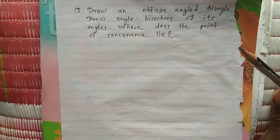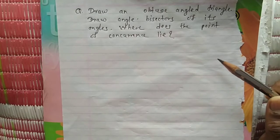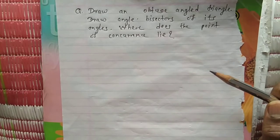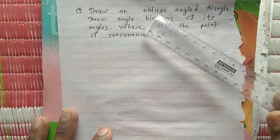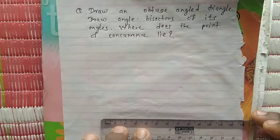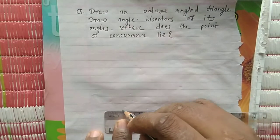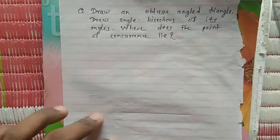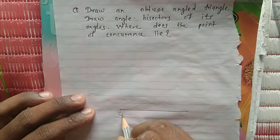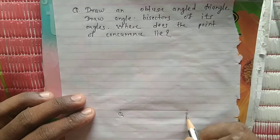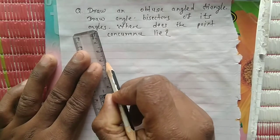The question is: draw an obtuse angle triangle, draw angle bisectors of its angles — where does the point of concurrence lie? So first of all, we have to draw an obtuse angle triangle. This is the base for our obtuse angle triangle. We name it as QR — an obtuse angle triangle means one angle is obtuse.